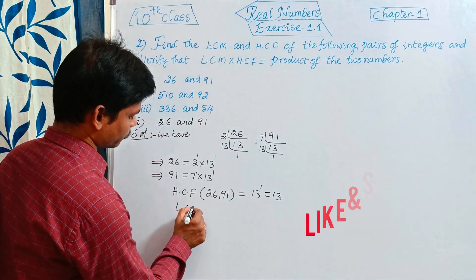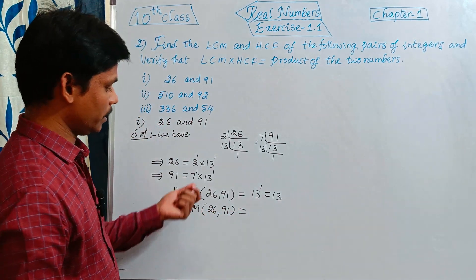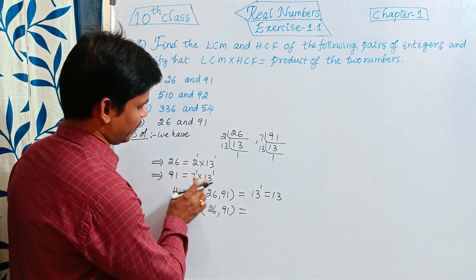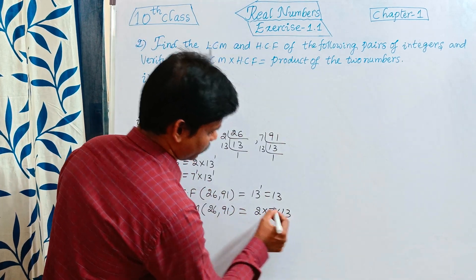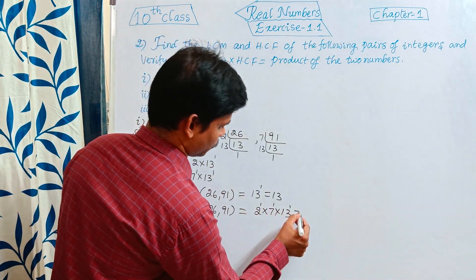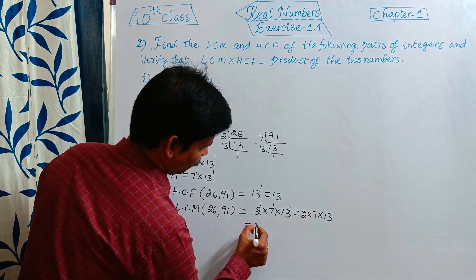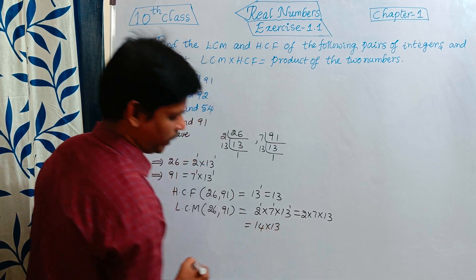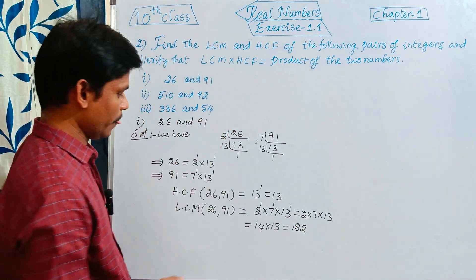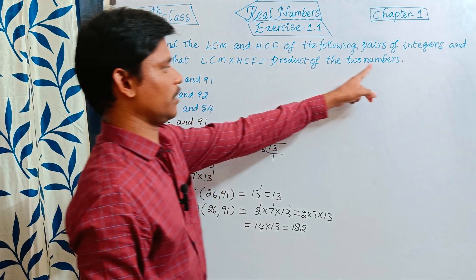Now LCM of 26 and 91: the least common multiple uses the greatest powers of all prime factors. The prime factors are 2, 7, and 13, all with greatest power 1. So LCM = 2 into 7 into 13 = 14 into 13 = 182.